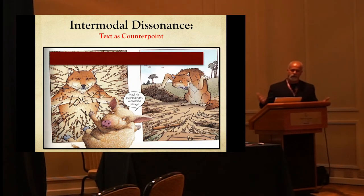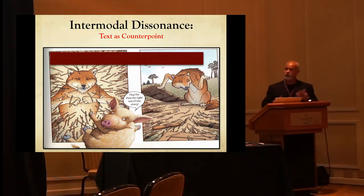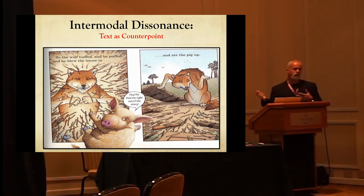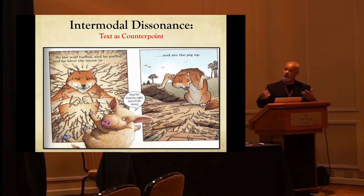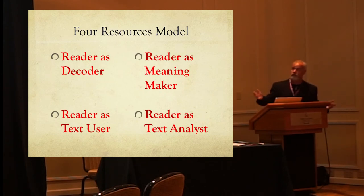And then we move into a third type — dissonance — which is a lot of part of postmodern picture books where something in the text exactly counterpoints or contradicts what's in the image. In this image, it says the wolf huffed and puffed and blew the house in and ate the pig up, but he didn't even eat the pig up. So if you tell kids to look at the picture and they can't read the words, they're screwed — because it doesn't say the same thing at all.